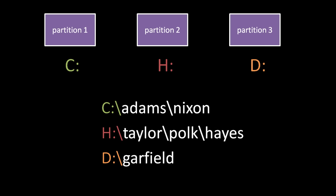The path C:\Adams\Nixon refers to a file or directory named Nixon listed in a directory Adams, itself listed in the root directory on the C partition. The path H:\Taylor\Polk\Haze refers to a file or directory named Haze listed in a directory Polk, listed in a directory Taylor, listed in the root directory on the H partition.